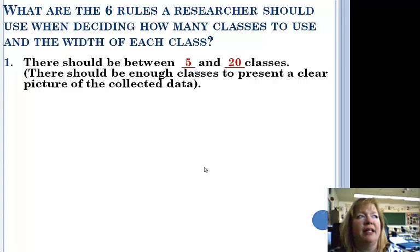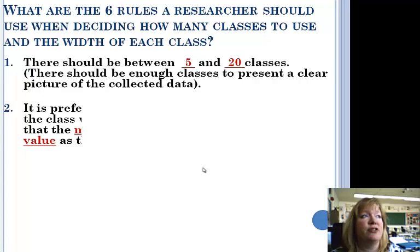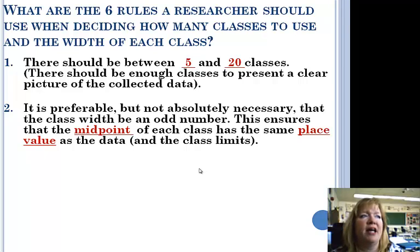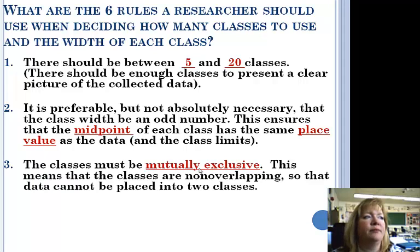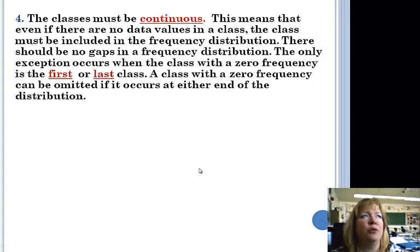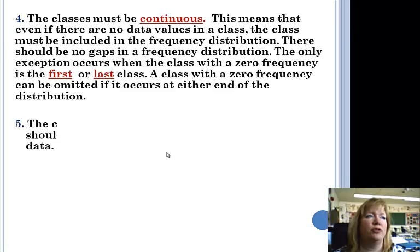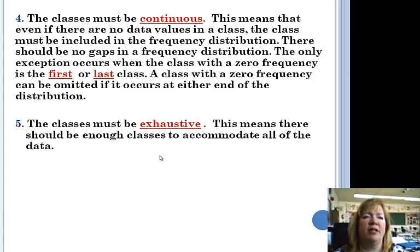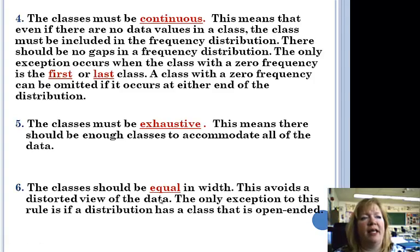Now on this thing, in our example today, we had the letter grades. There were five letter grades. So that fit with this perfectly. But you can, as a researcher, decide how many classes you're going to have. It is probable, but not absolutely necessary, that the class width be an odd number. This helps with the calculation of the midpoint, because it'll have the same place value as the data. The classes must be mutually exclusive, no overlapping, so that data can't be placed into two different ones. Number four, classes must be continuous, so there can be no gaps in the data. And the only exception occurs when the class with a zero frequency is the first or last class. A class with zero frequency can be omitted if it occurs at either end of the distribution. Classes must be exhaustive, means there should be enough classes to take all the data and to place all the data into a class. Classes should be equal in width, so you don't get skewed data, otherwise you're manipulating things to your own ends.